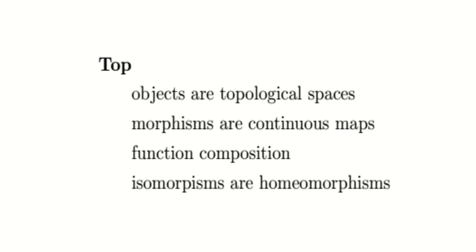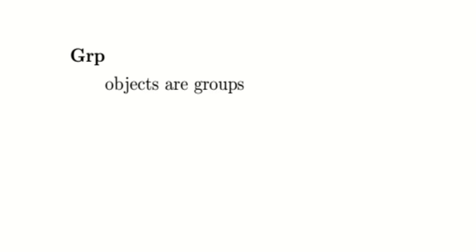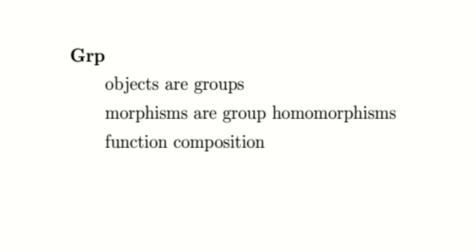We also have the category of groups. The objects are groups, the arrows are group homomorphisms, and composition of arrows is defined similarly. Isomorphisms in this category are, you guessed it, group isomorphisms.